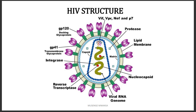The function of p17 in the matrix is to provide stability and maintain the structure of the virus. The capsid, made up of p24, functions to store and embed the two RNA molecules as well as the enzymes which are critical for the HIV virus.